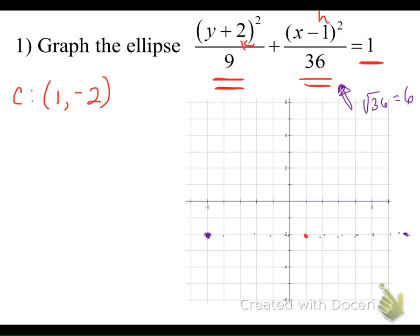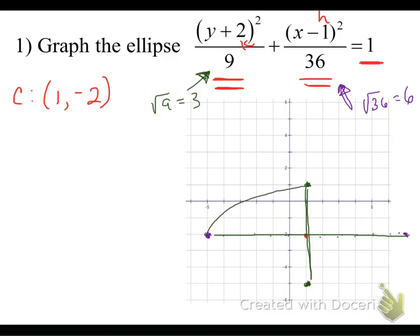Our vertical distance is the number underneath the y-squared term. We take the square root of that, giving us a vertical distance of 3 units. We come up 3 units and down 3 units from the center. These are called covertices because they give us the shorter diameter. The two points 6 units left and right are our vertices. We connect all four points into a nice, smooth ellipse.